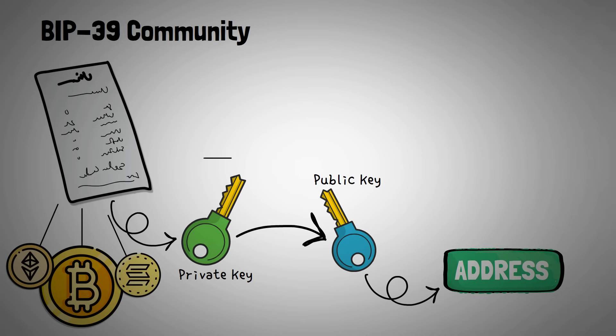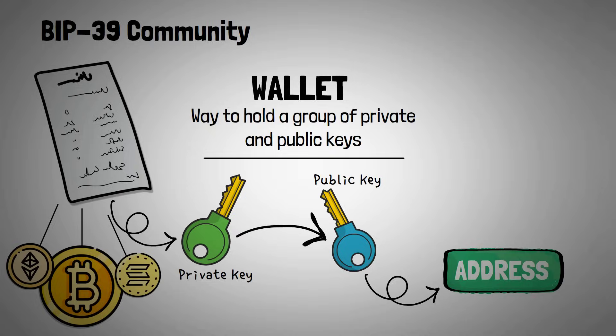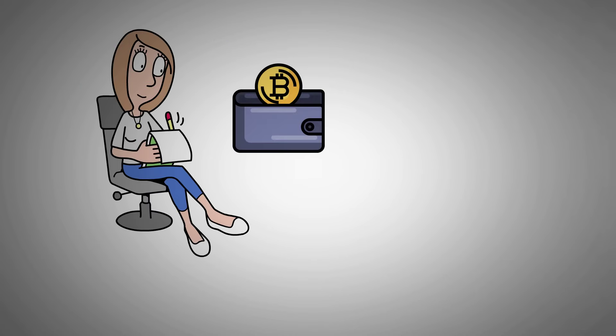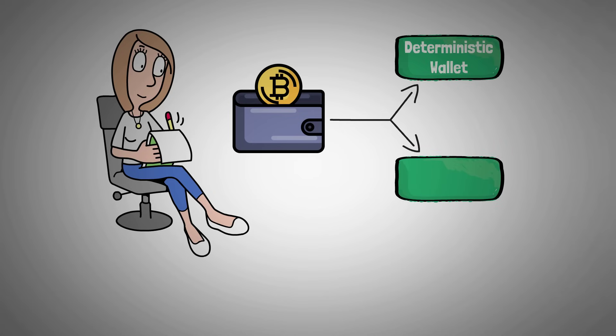Before we can get started, know that a wallet is a way to hold a group of private and public keys so that you can effectively have access to many different crypto accounts. In order to understand BIP39, we need to understand the differences between a deterministic wallet and a non-deterministic wallet.